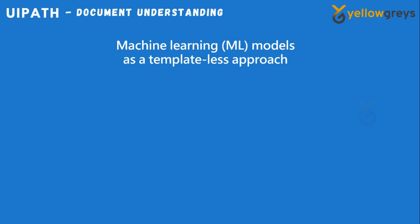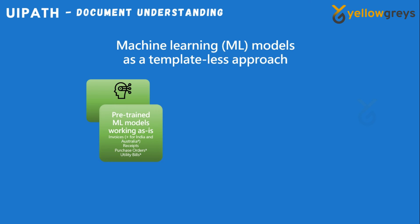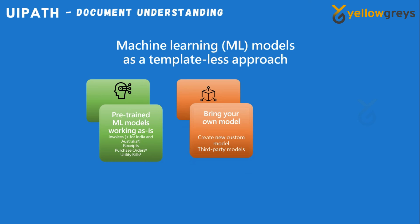When using a model-based or custom approach, pre-trained ML models work out of the box. Invoices, receipts, purchase orders, and utility bills are the document formats currently supported. As of now, this is available for India and Australia. You can also train the model in the Validation Station or bring your own model extractor.